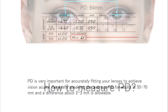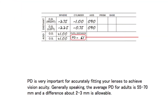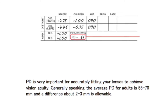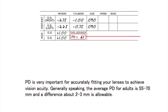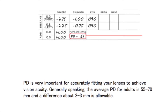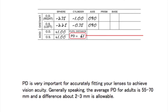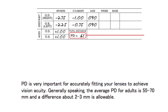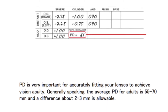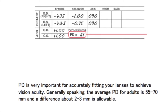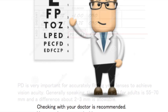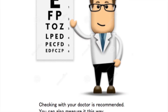How to Measure PD. PD is very important for accurately fitting your lenses to achieve vision acuity. Generally speaking, the average PD for adults is 55-70mm and a difference of about 2-3mm is allowable. Checking with your doctor is recommended.